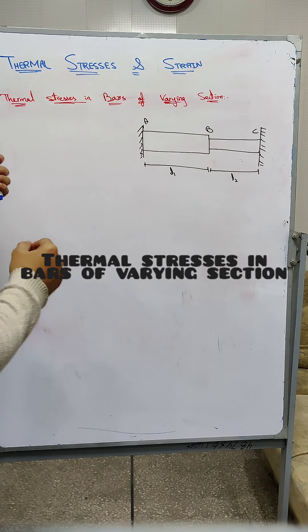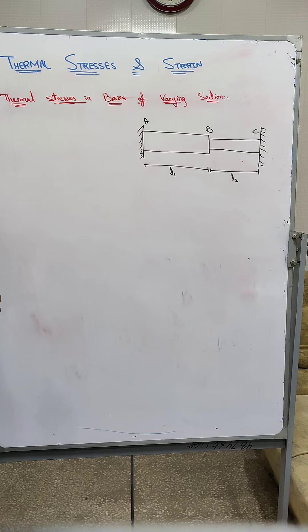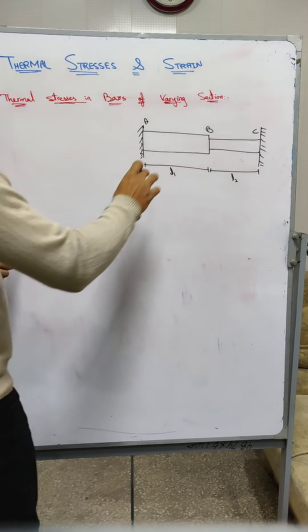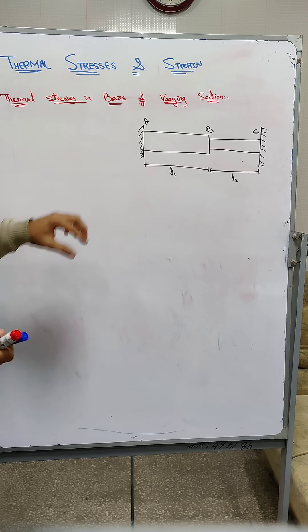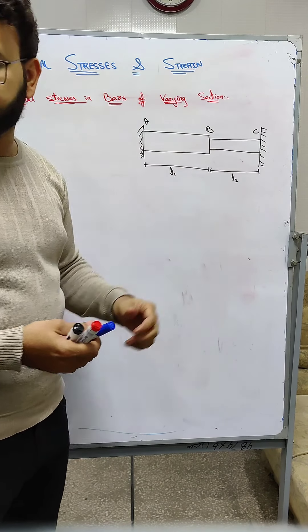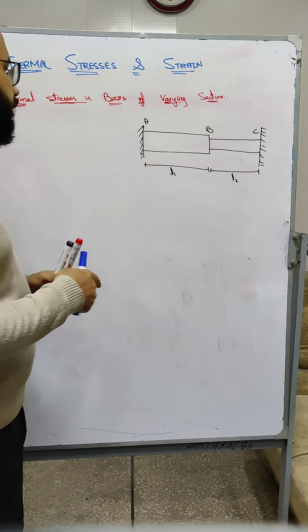Okay, now we want to discuss the thermal stresses of bars in bars of varying sections. The cross-sectional area changes. Let's suppose this is a cross-sectional area A1 and this is a cross-sectional area A2.